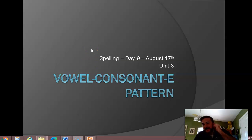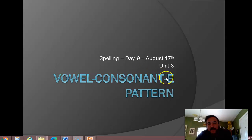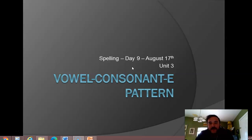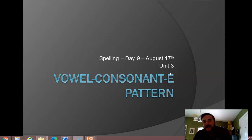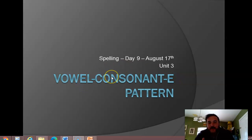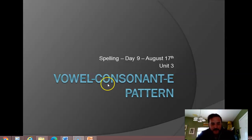Hey guys, starting week three — we're on unit three. If you're in your spelling books, open up unit three. We have something called a vowel consonant E pattern, and there's a very specific reason why this follows our couple-week unit on short vowels. This E at the end of a word is a silent E, and it changes the vowel before the consonant from a short vowel to a long vowel.